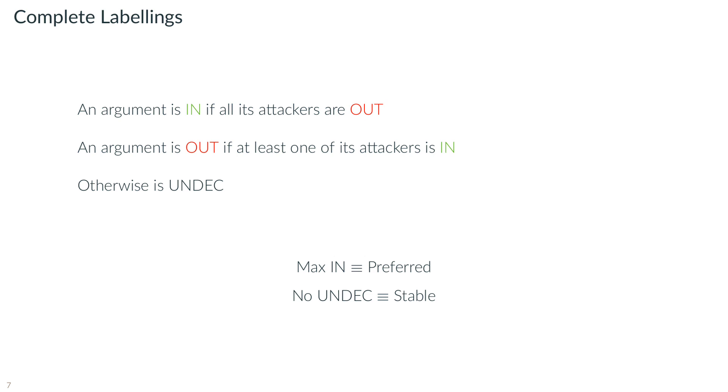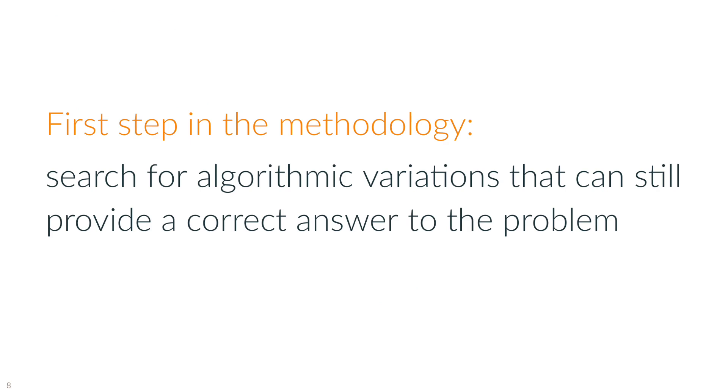If we then maximise the set of in arguments, we obtain preferred labelling. Similarly, if we impose not to have any undecided argument, we then obtain stable labelling. There is a one-to-one correspondence between labelling and extensions. The set of in arguments of a labelling, for instance a preferred labelling, provides its corresponding extension, for instance the preferred extension.